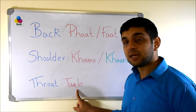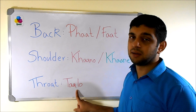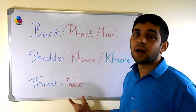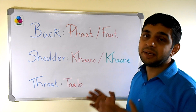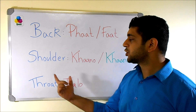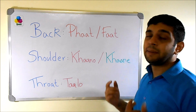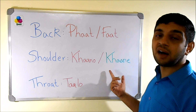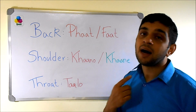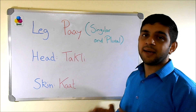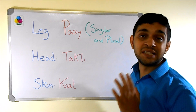Throat is 'talo'. The 'l' here — this is not a different 'l', it is a plain 'l'. So: talo. To recap: back is 'fart', one shoulder is 'khano', many shoulders are 'khanay', and throat is 'talo'. Leg is 'pine'.